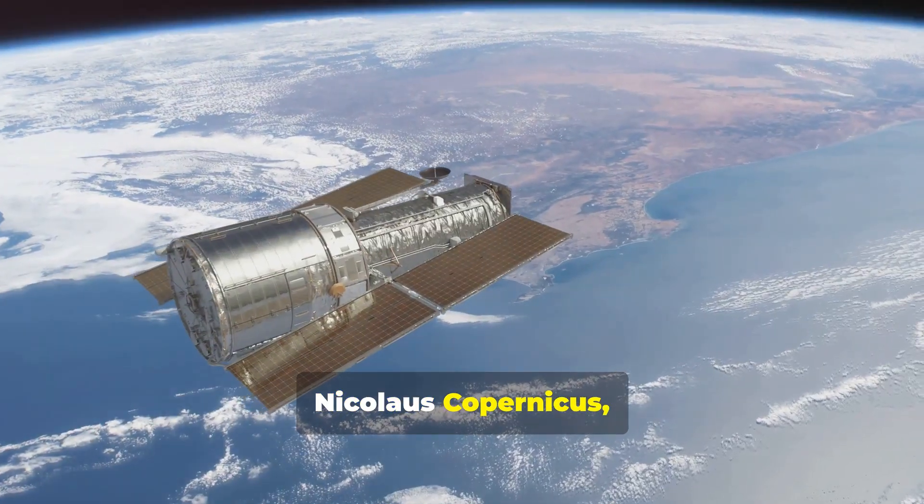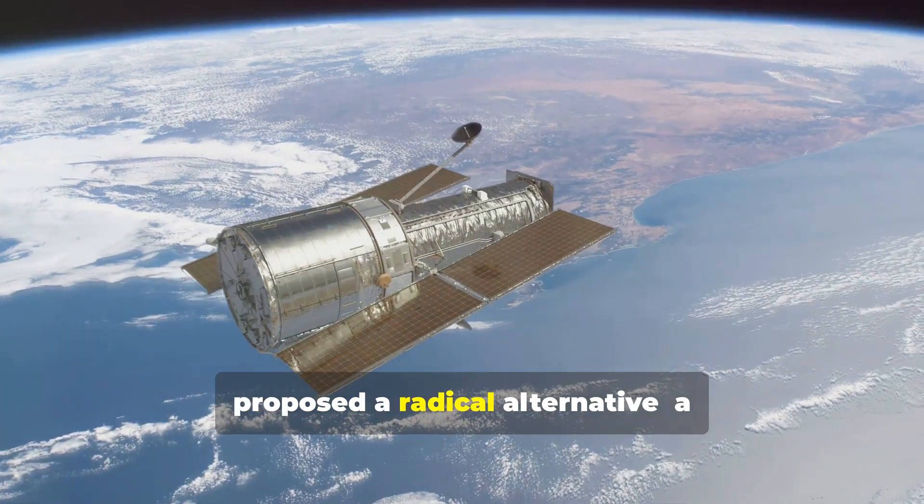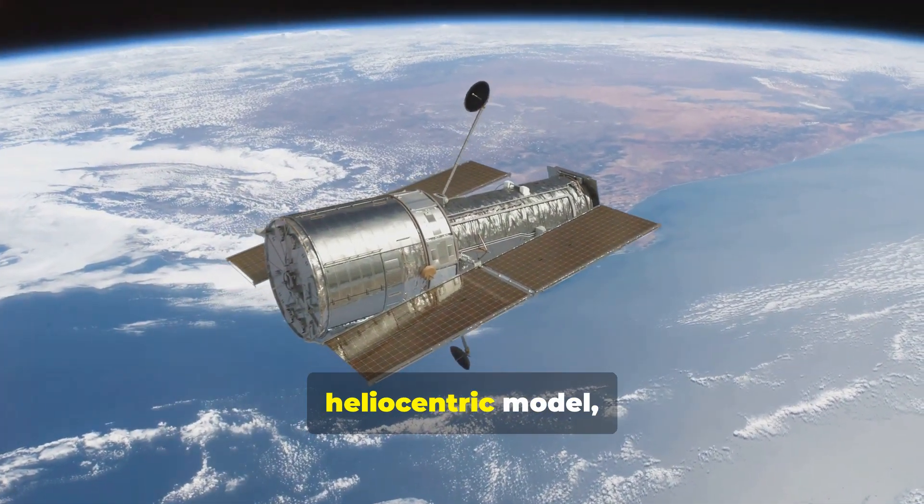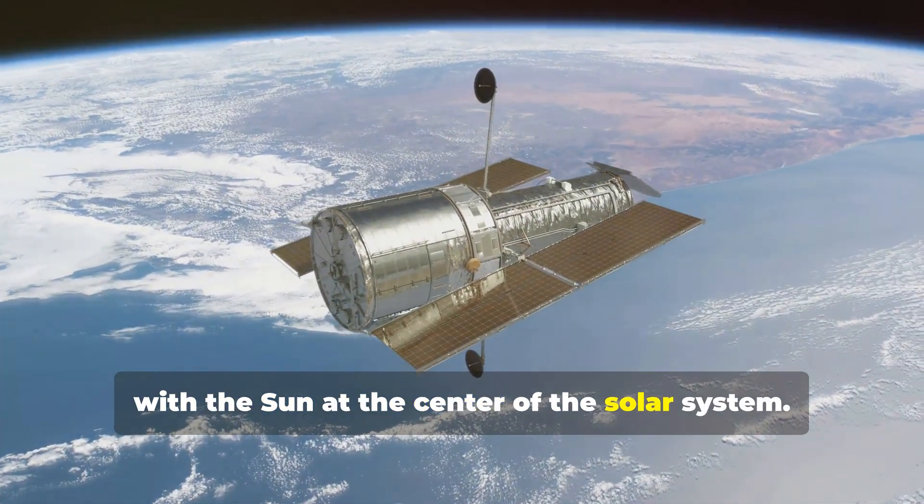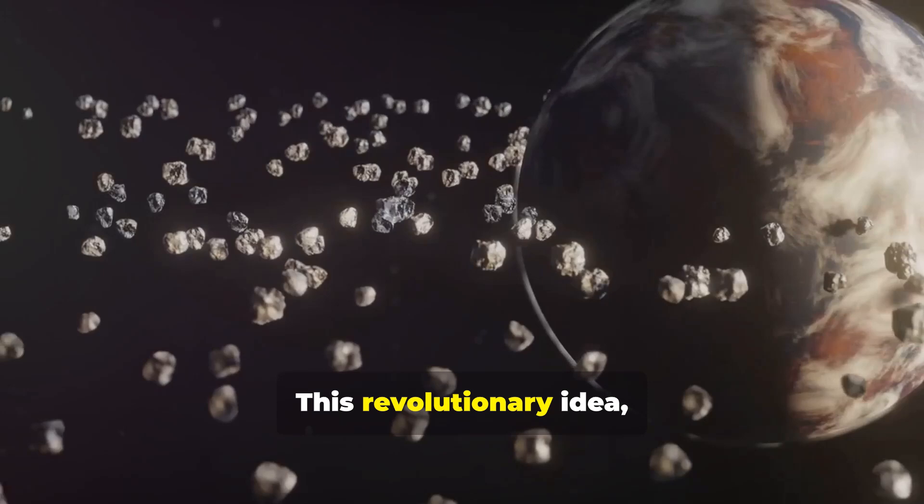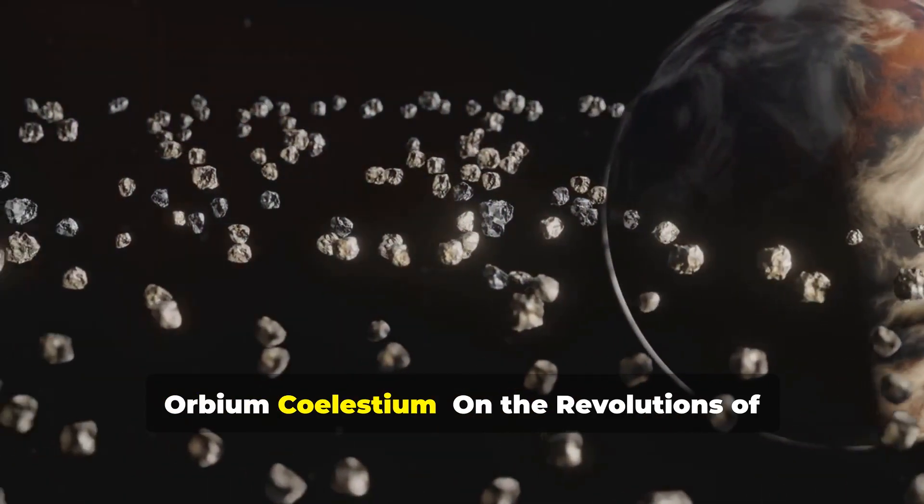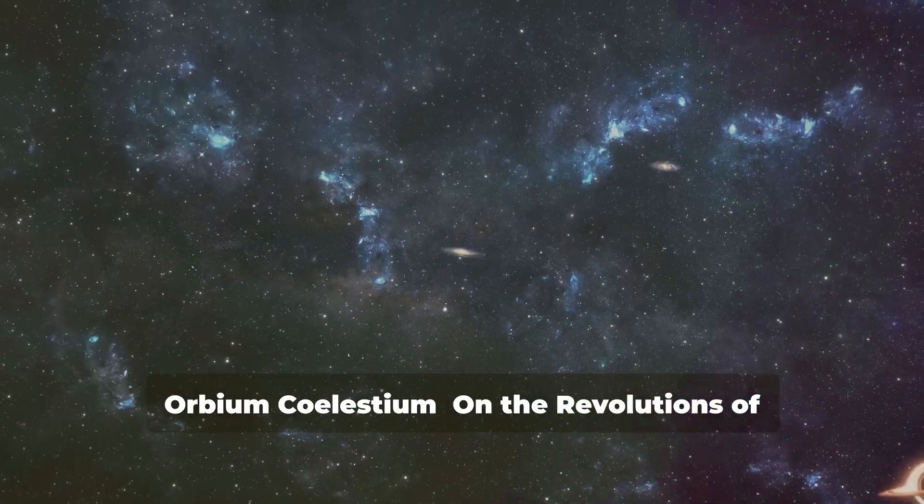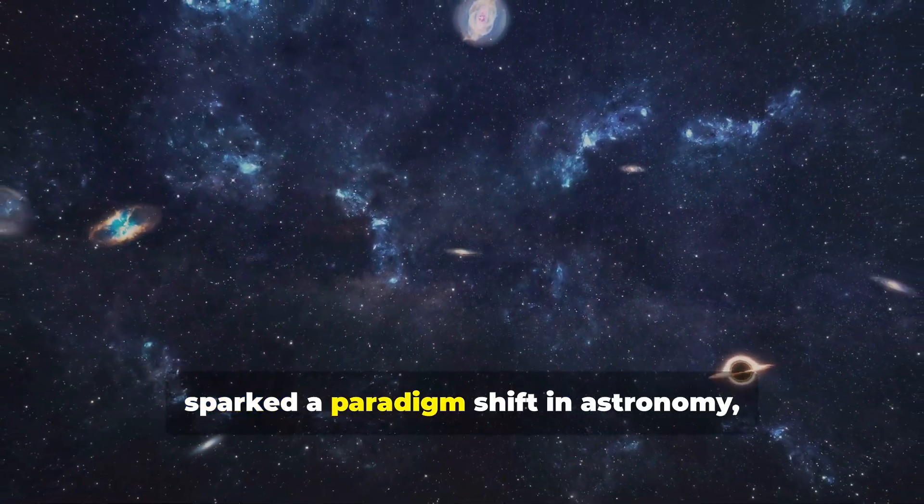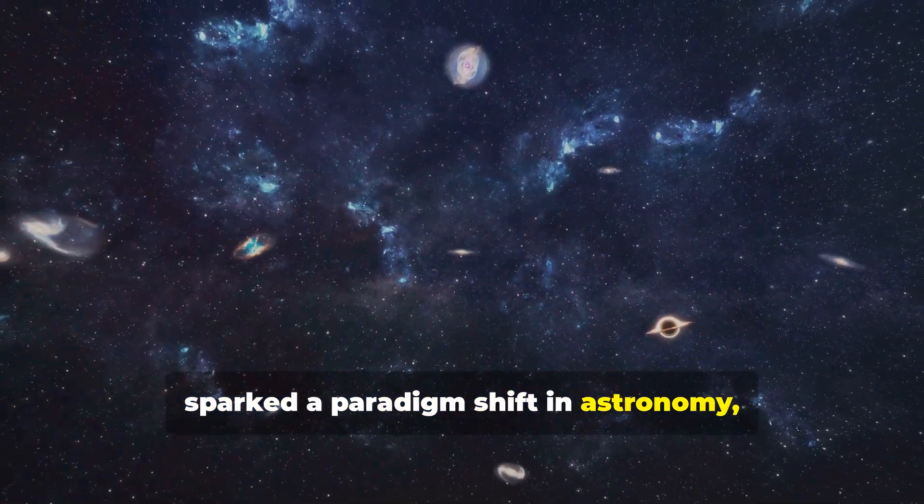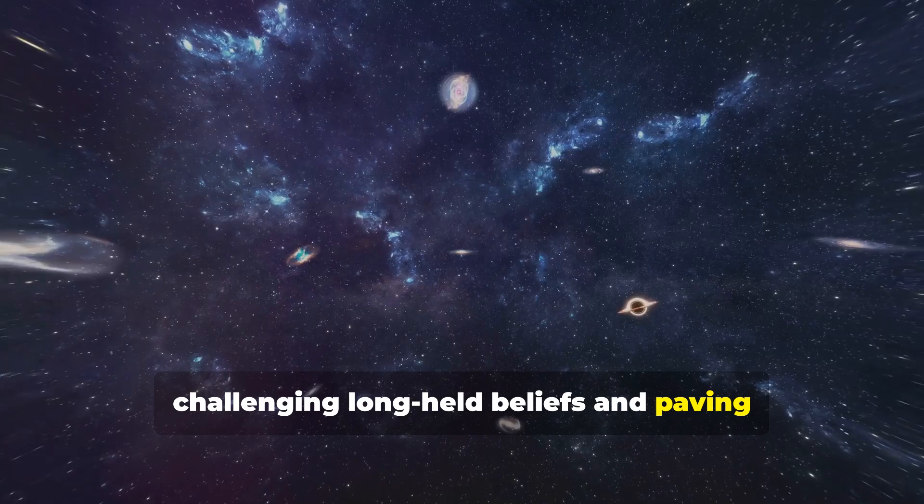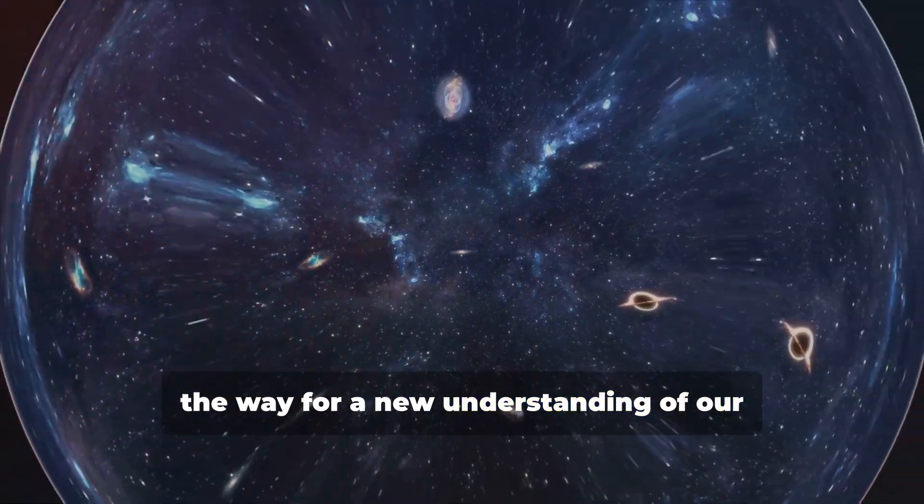Nicholas Copernicus, a true visionary, proposed a radical alternative, a heliocentric model with the sun at the center of the solar system. This revolutionary idea, published in his book, De Revolutionibus Orbium Coelestium, on the revolutions of the heavenly spheres, sparked a paradigm shift in astronomy, challenging long-held beliefs and paving the way for a new understanding of our place in the cosmos.